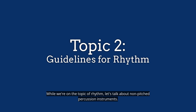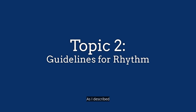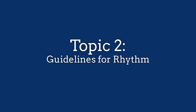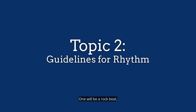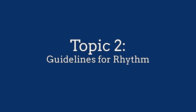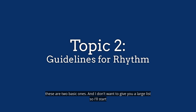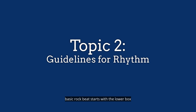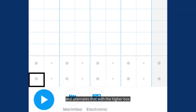While we're on the topic of rhythm, let's talk about non-pitched percussion instruments. As I described in the last lesson, non-pitched percussion instruments provide a foundation for the beat and also provide added color to the music. I will give you two different basic rhythmic patterns — one will be a rock beat and the other will be an EDM beat. A basic rock beat starts with the lower box and alternates that with the higher box, so that's kick drum followed by a snare, and these occur on the beat.